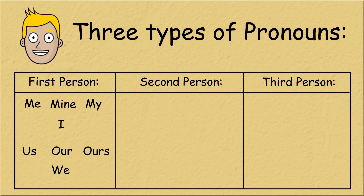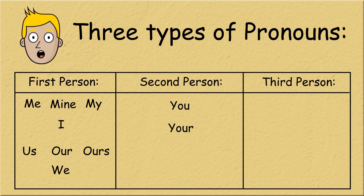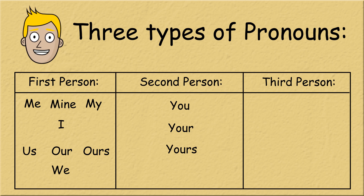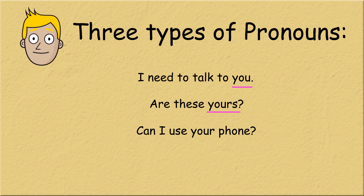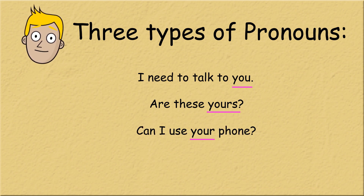Second person pronouns refer to the other person. We can say second person pronouns are used when talking about you. They include the pronouns you, your and yours. These pronouns can be used in both singular and the plural form. Let's look at some examples: I need to talk to you. Are these yours? Can I use your phone?